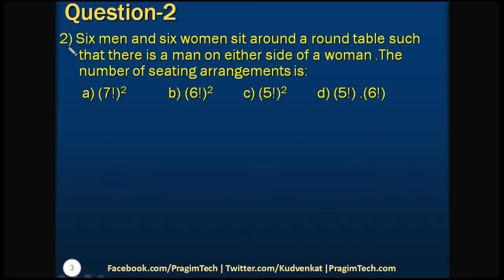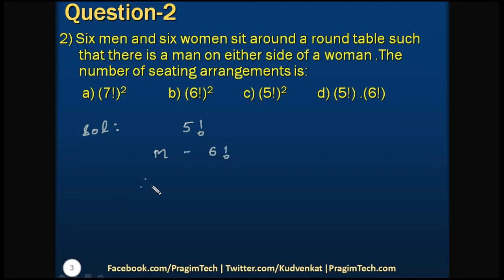Let us look at another type of question based on circular permutations. Here we have to arrange 6 men and 6 women around a table such that there is a man on either side of every woman. First we arrange 6 women around a circular table in 5! ways. Once the ladies are arranged, there will be 6 vacant positions next to women, and we can arrange 6 men in those positions in 6! ways. By the fundamental principle of counting, the total number of permutations is 5! × 6!.